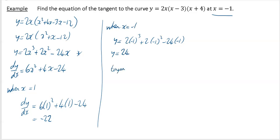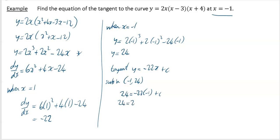So looking at our tangent now: y is equal to minus 22x plus c. That's from your y equals mx plus c equation. Then we want to substitute in the coordinate we now know, which is (minus 1, 24). So my y value is 24, my x value is minus 1. Put that in: 24 equals 22 plus c. So 24 minus 22 equals c, so 2 equals c. So your answer is your tangent is y is equal to minus 22x plus 2.